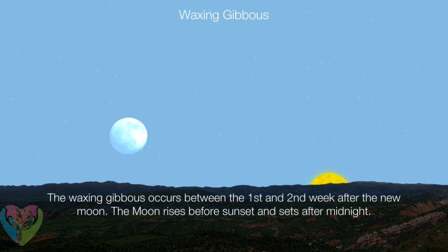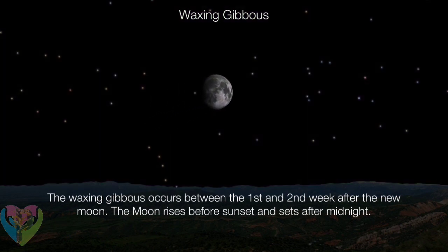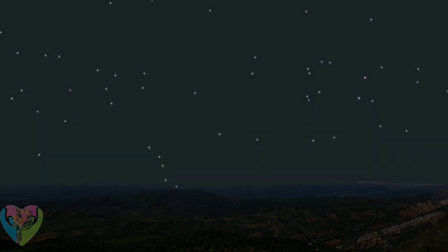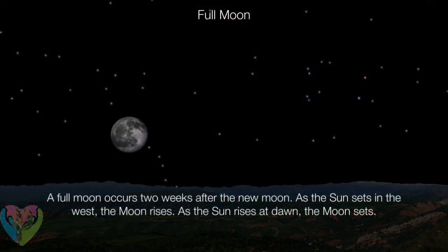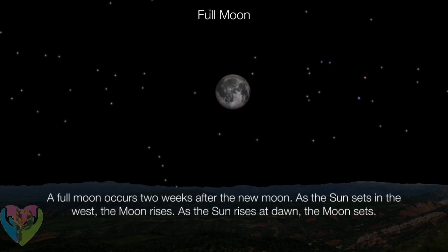The waxing gibbous occurs between the first and second week after the new moon — the moon rises before sunset and sets after midnight. A full moon occurs two weeks after the new moon. As the sun sets in the west, the moon rises. As the sun rises at dawn, the moon sets.